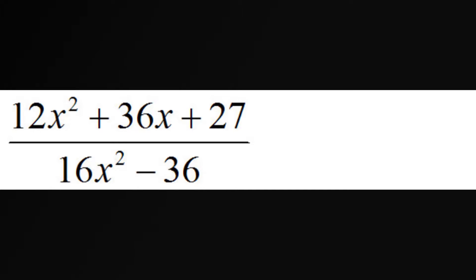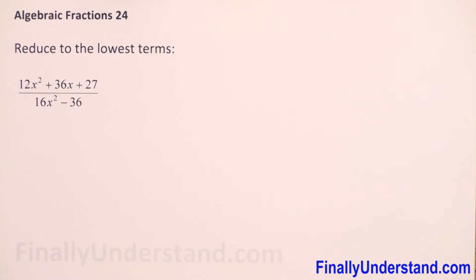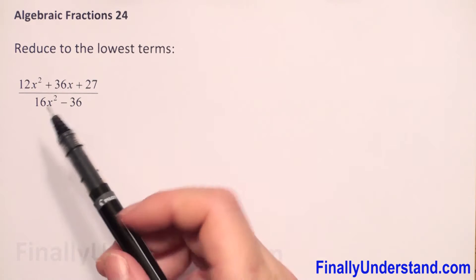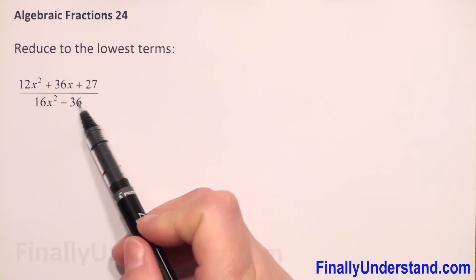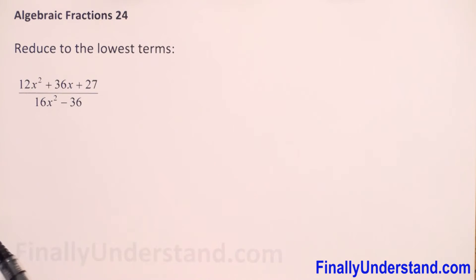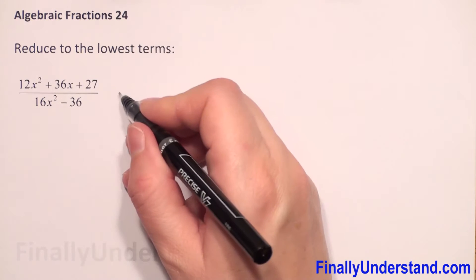We have an algebraic fraction. We know that we can reduce an algebraic fraction only when we have multiplication in the numerator and multiplication in the denominator. Here we have addition and subtraction, so first we have to factorize.